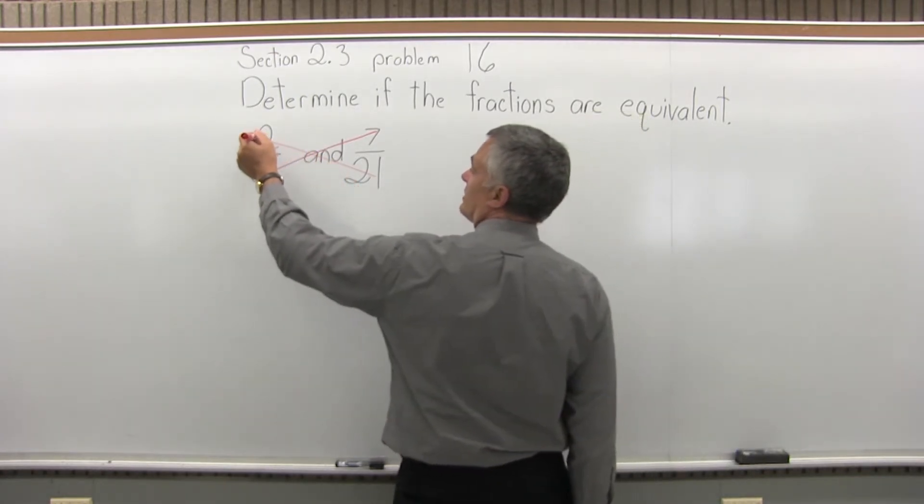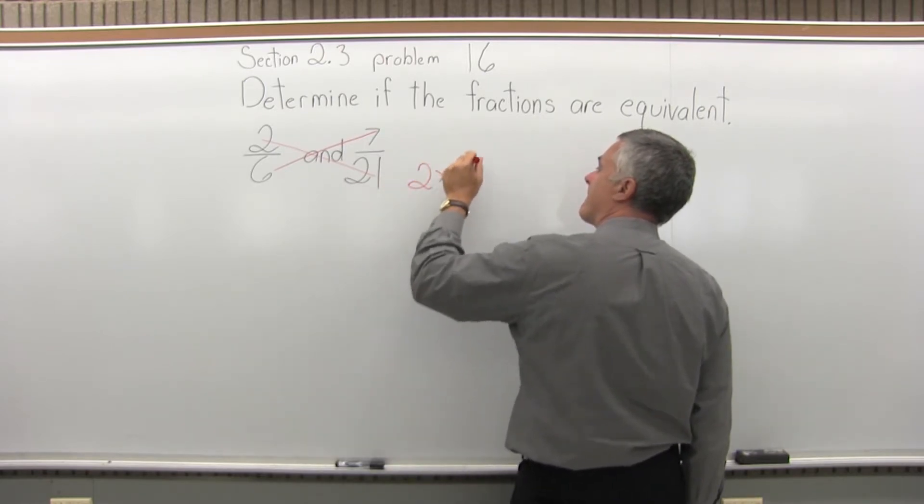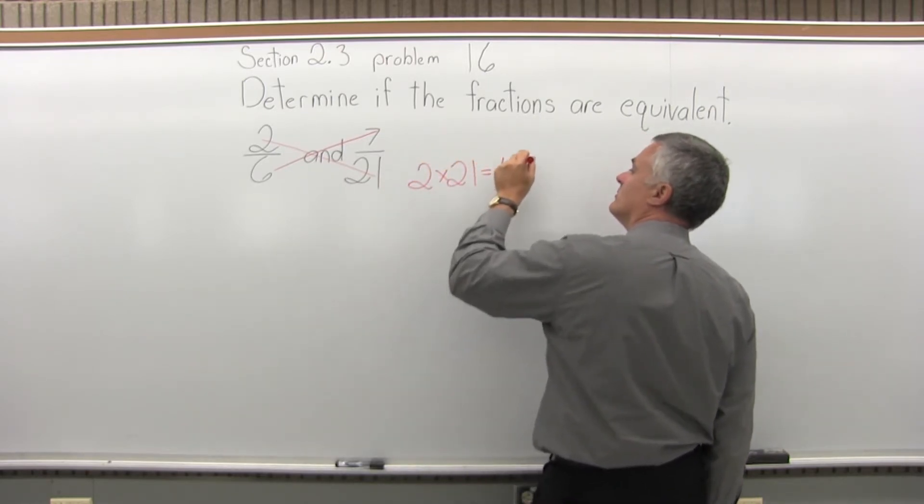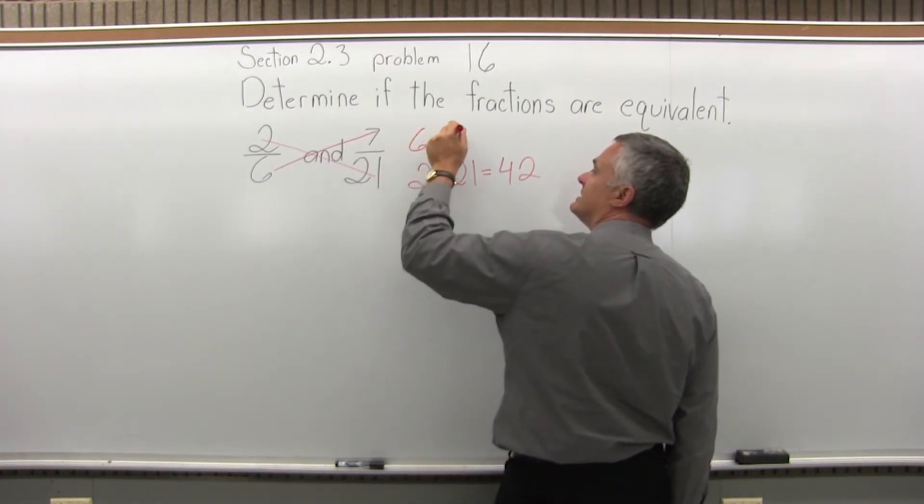So when I multiply 2 times 21, I get 42. And then for the other path, if I multiply 6 times 7,